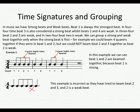Now, making grouping a little trickier: in music we have strong beats and weak beats. Beat 1 is always the strongest beat in every bar. In 4/4 time, beat 3 is also considered a strong beat, whilst beats 2 and 4 are weak. In 3/4 time, beats 2 and 3 are weak. In 2/4, beat 2 is weak. We can group a strong and weak beat together only when the strong beat is first. For example, we could beam four quavers together if they were on beats 1 and 2, but we could not beam beats 2 and 3 together, as beat 2 is weak.